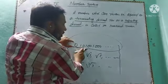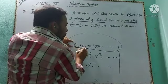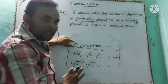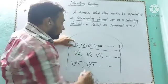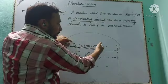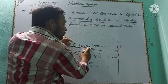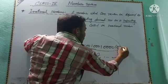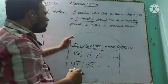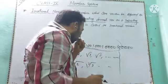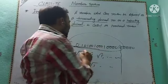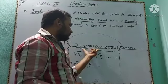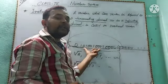This number is neither terminating nor repeating. If it were terminating, it would end after a fixed number of digits with remainder zero. But in this number, the pattern is: one zero, one zero zero, one zero zero zero — the number of zeros keeps increasing. So it is neither terminating nor repeating — it is an irrational number.